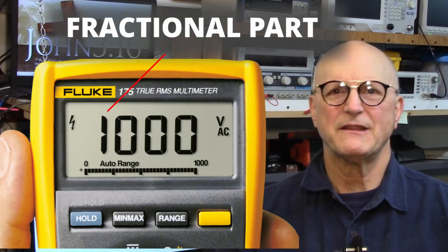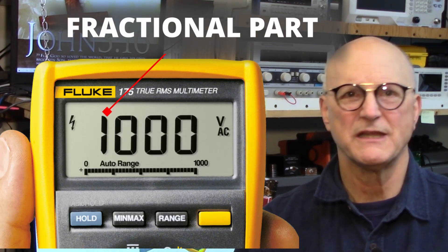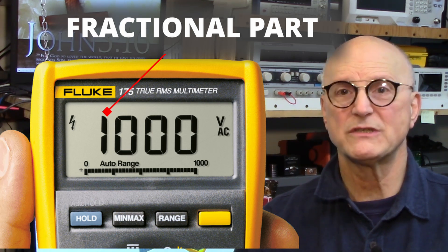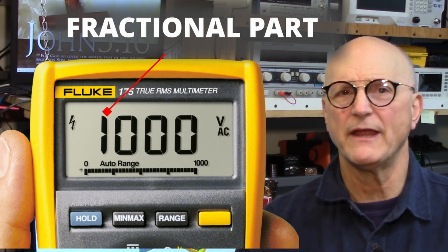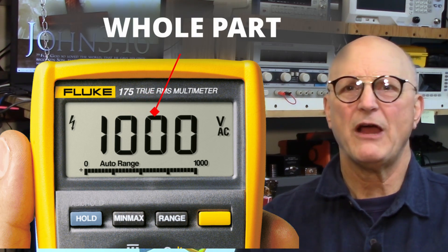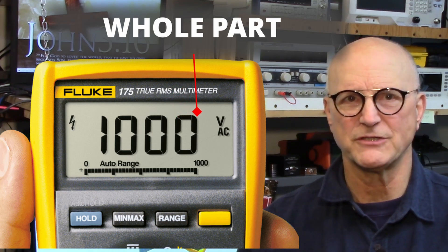Are you confused yet? Don't even try to do math to figure this one out. The takeaway from this is that the fractional part of the digit specification just means that you are not going to see every possible number in the most significant digit of the display. The whole part of the digit specification tells you how many full digits you have to the right of that fractional digit.